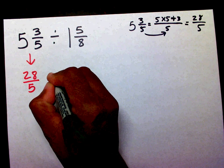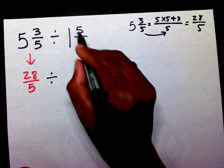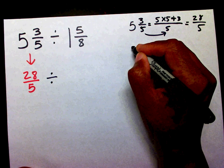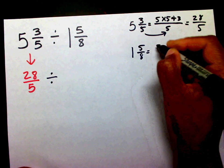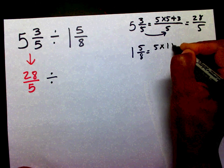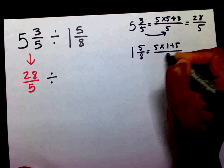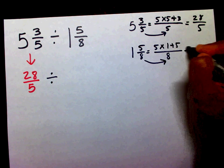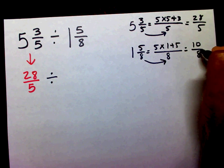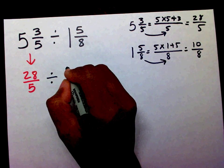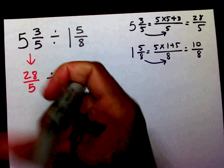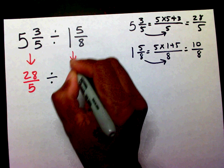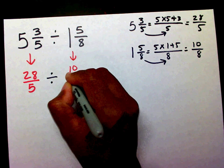Divide it by. Now I need to change this mixed number into an improper fraction. Over here on this side: five times one plus five over eight. Five times one is five, plus five is ten. So instead of me writing one and five-eighths, I can write ten over eight.